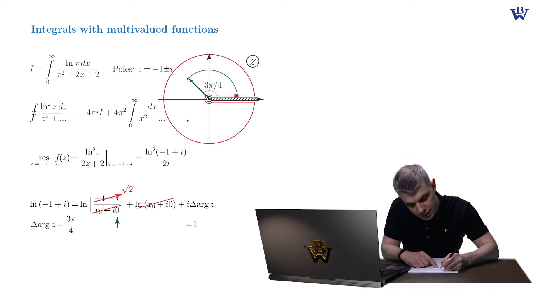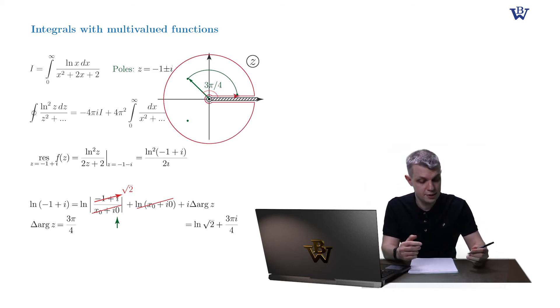Which is simply log of square root of 2 plus 3 pi i by 4. Now we obtained the residue.